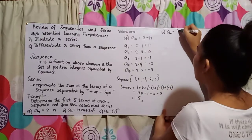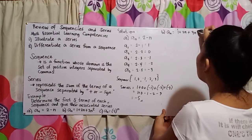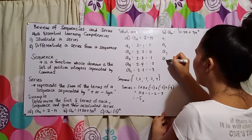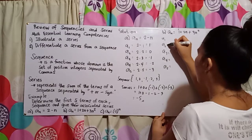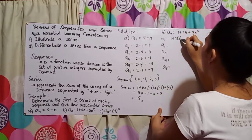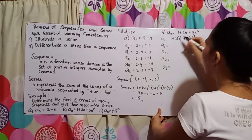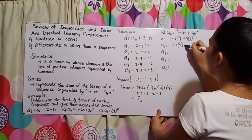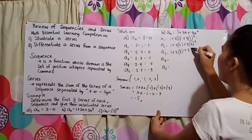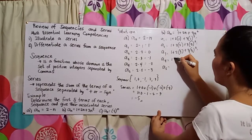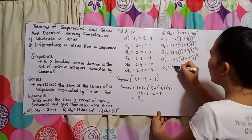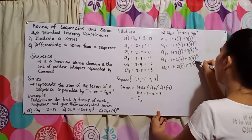For letter B, the given is a sub n equals 1 plus 2n plus 3n squared. We again find the first five terms. We substitute n = 1 through 5: 1 plus 2 times 1 plus 3 times 1 squared; 1 plus 2 times 2 plus 3 times 2 squared; 1 plus 2 times 3 plus 3 times 3 squared; 1 plus 2 times 4 plus 3 times 4 squared; and 1 plus 2 times 5 plus 3 times 5 squared.